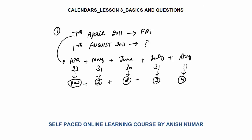Now add these odd days: 2+3=5, 5+2=7, 7+3=10, 10+4=14. 14 divided by 7 gives remainder 0. That means 0 odd days. Zero odd days means the same day. So 11th August 2011 would be the same day — Friday.